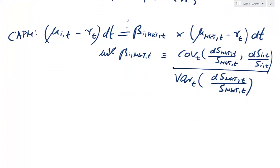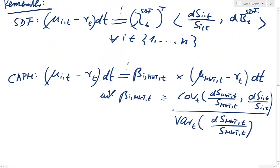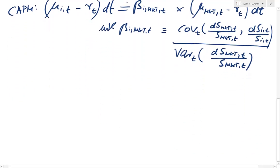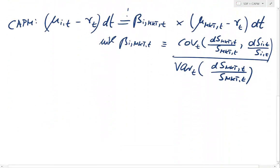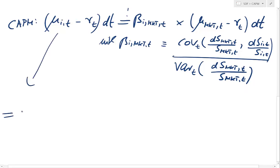We now want to manipulate the beta concept to see that it is just a special case of the SDF approach. We take that equation and write the risk premium in terms of the covariance part.